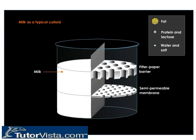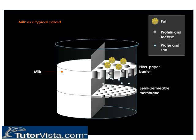The particle sizes of a colloidal solution are such that they can pass through ordinary filter paper, but not through a semi-permeable animal membrane. Observe what happens when a colloidal solution like milk is passed through a filter paper barrier and then through a semi-permeable membrane. Ordinarily, colloids cannot be seen by the naked eye, but can be viewed only under a powerful microscope.